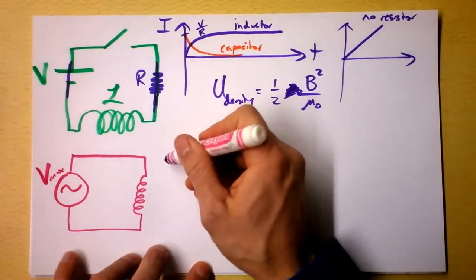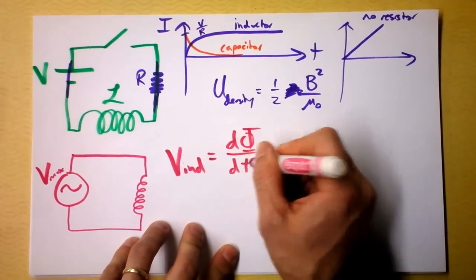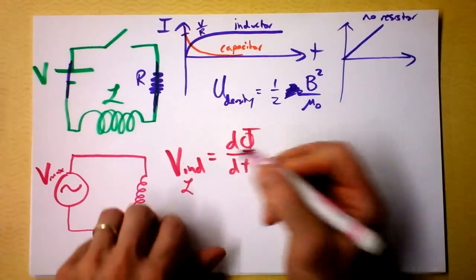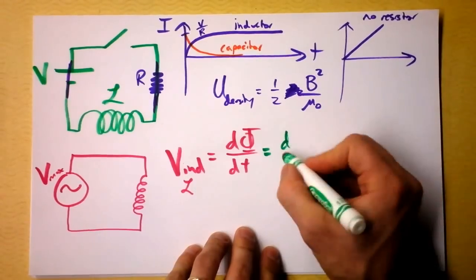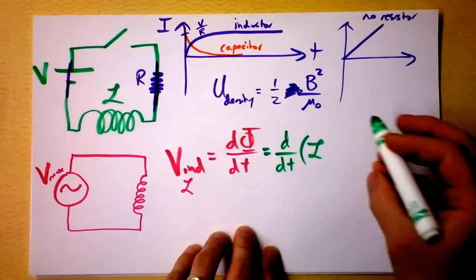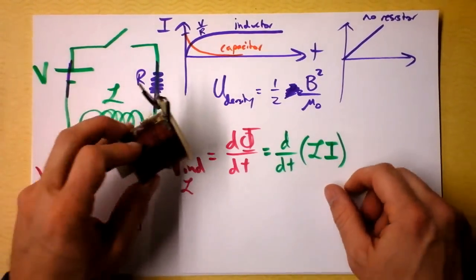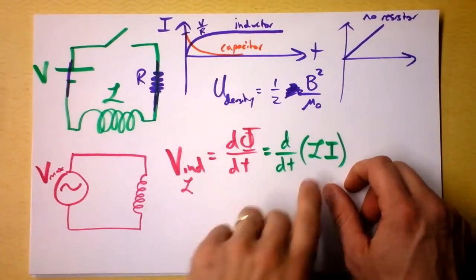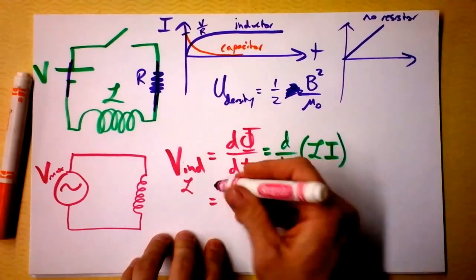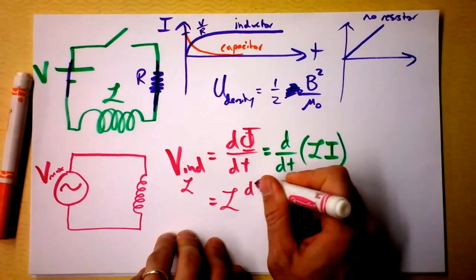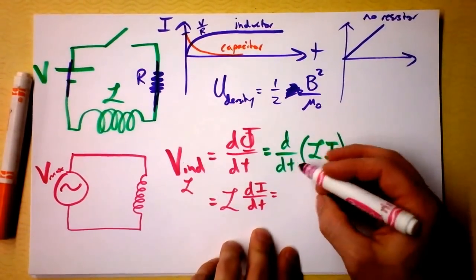There's a derivative in here: the induced voltage is just dΦ/dt, which is the same as the derivative of the inductance times the current — d(LI)/dt. Assuming the inductor is a physical object sitting there, its physical characteristics give us the inductance L. So L pulls out, and I plug in the derivative of the current as a function of time. That current is doing that sine thing as before.